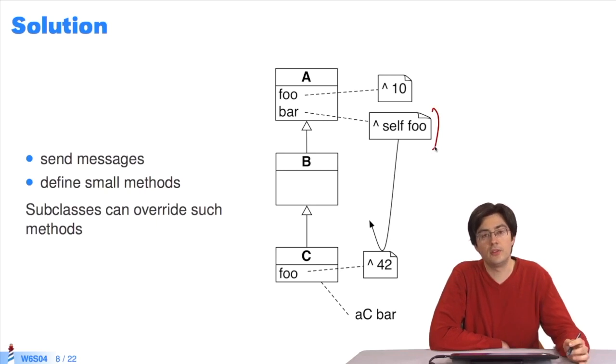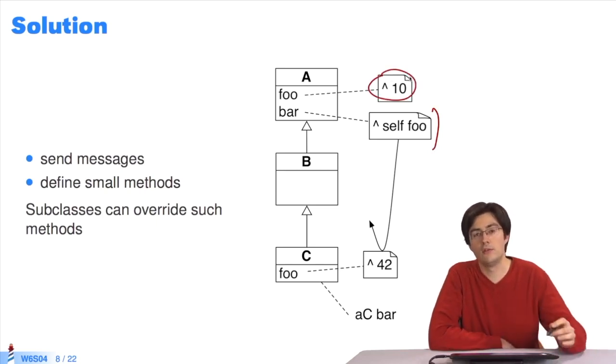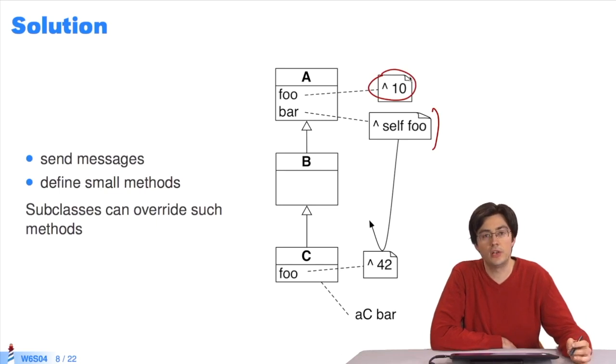If we look at the bar method, it sends foo to self. In A, foo returns 10. But the subclasses can override this value, and replace it with 42, for example.